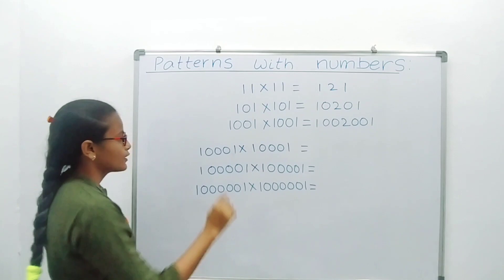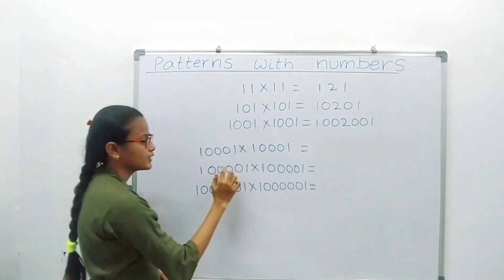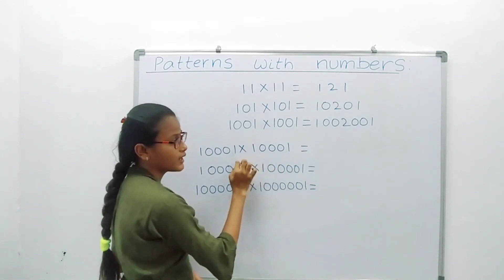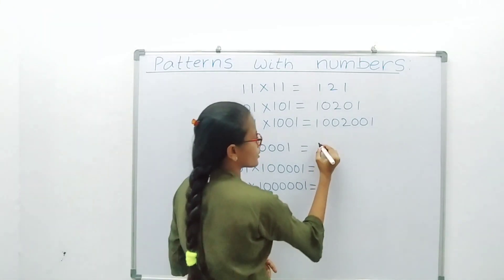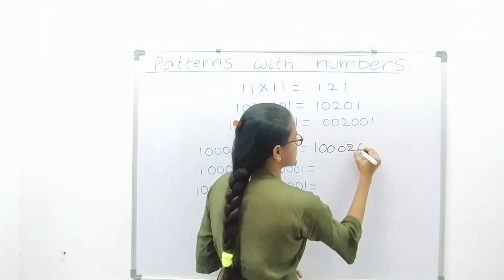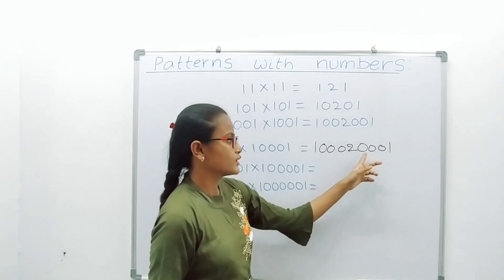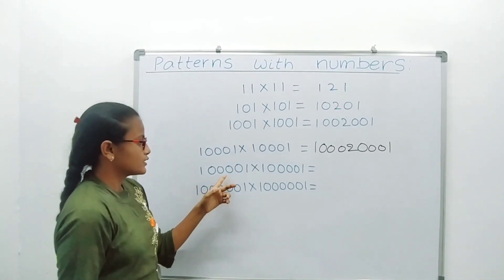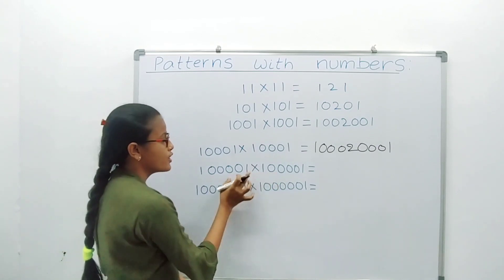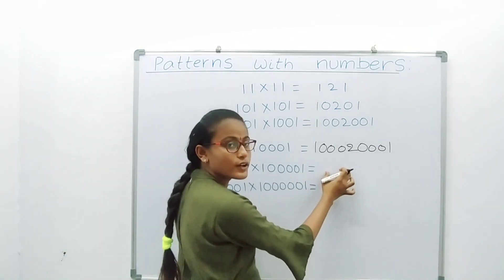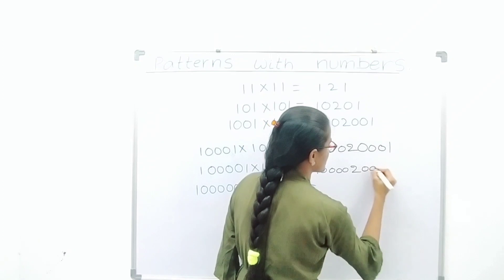10001 into 10001 — here we are including three 0s. In the answer also, we are including three 0s left and right of 2. The answer is 100020001. 100001 into 100001 — here we are including four 0s. The answer also has four 0s left and right of 2: 10000200001. 1000001 into 1000001 — here we include five 0s. The answer has five 0s left and right of 2: 1000002000001.